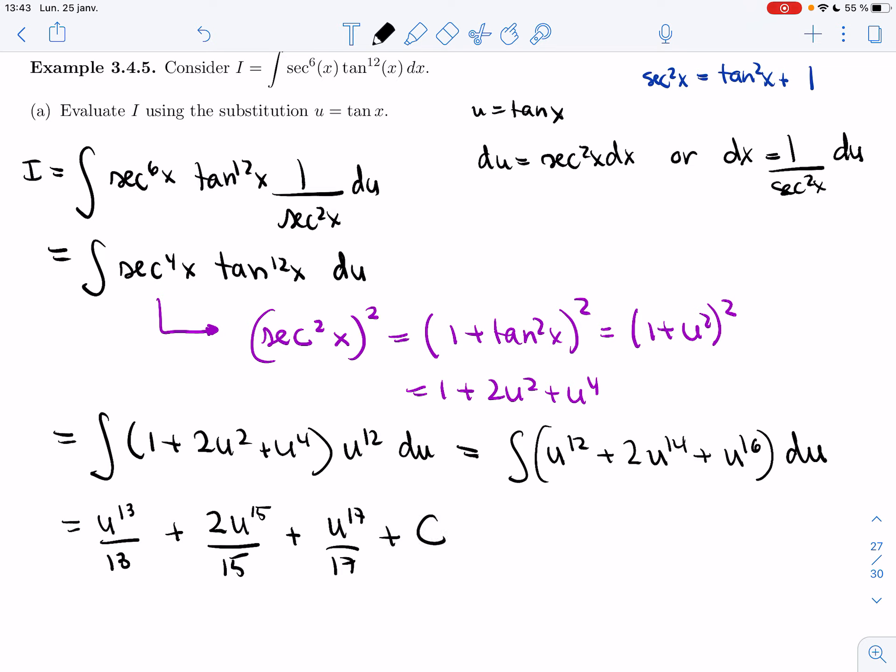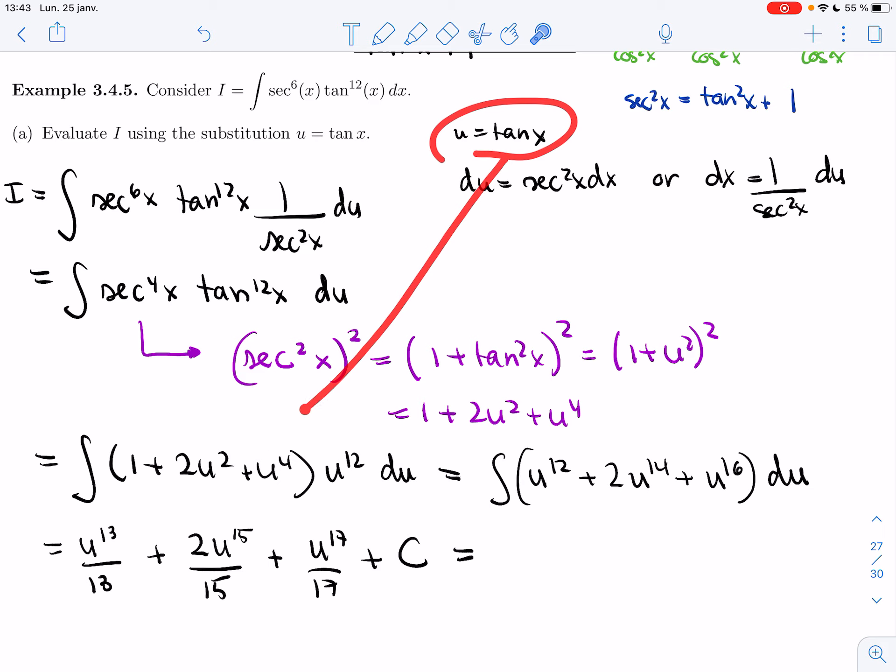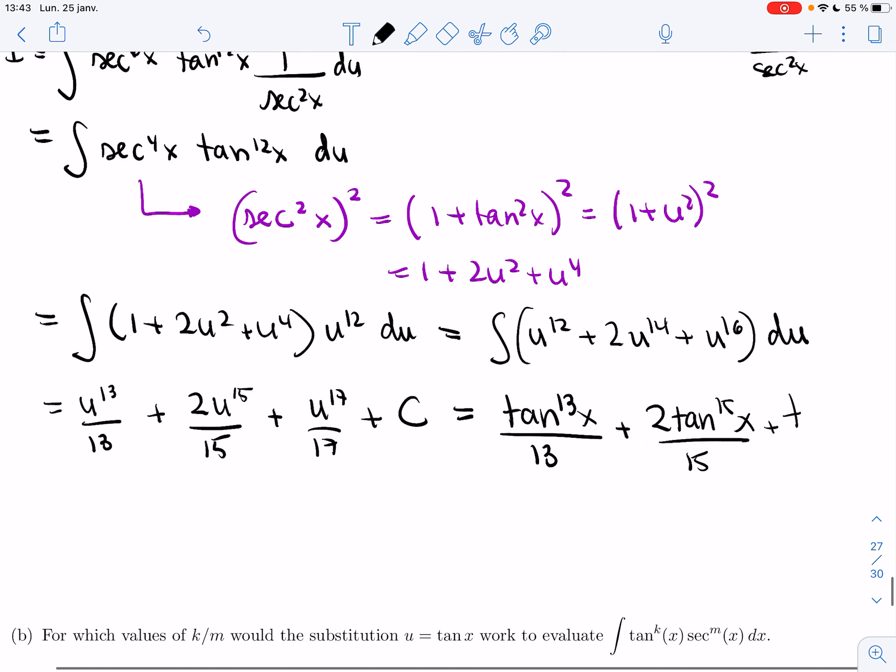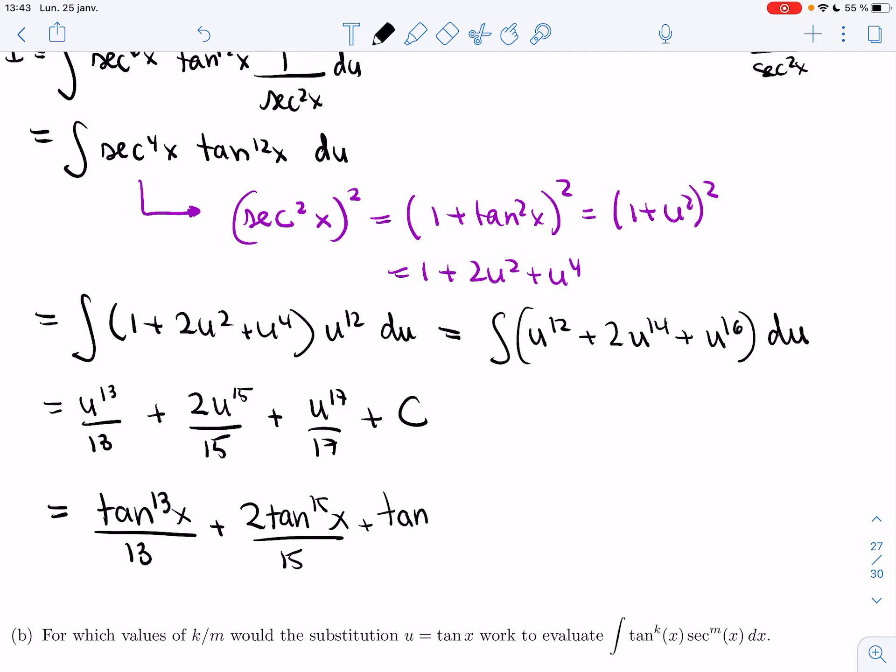I integrate them using the power rule. And then when I'm done with that, I'm gonna need to plug tan back in instead of the u's. So I'll get tan 13x over 13 plus 2 tan 15x over 15 plus tan 17x over 17 plus c.